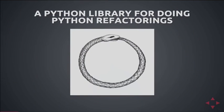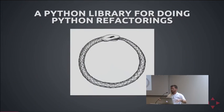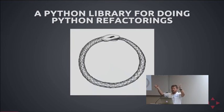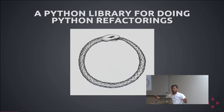So what is Rope? Rope is a Python library for doing Python refactorings. That's why I kind of have the snake eating itself. It's a Python module you can import, and then you can have it look at your source code, and it can do things like renames and pulling out functions and all that kind of stuff.